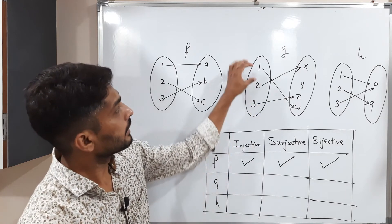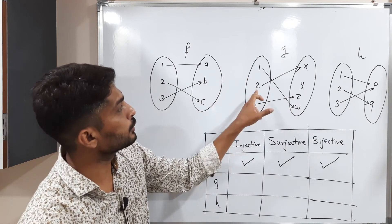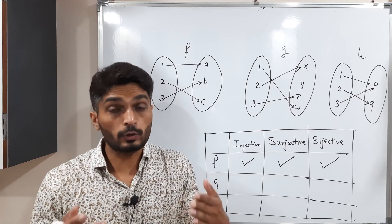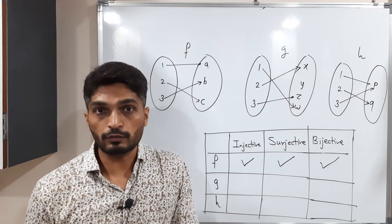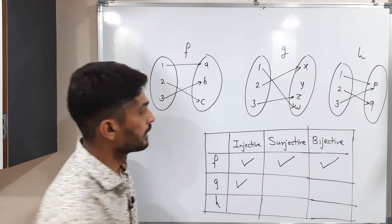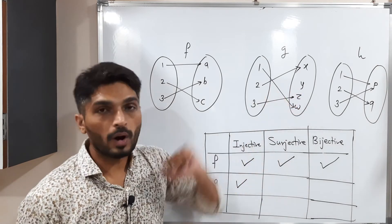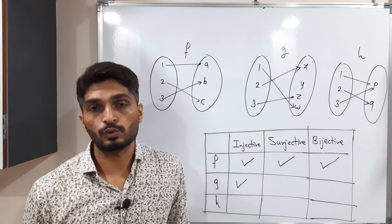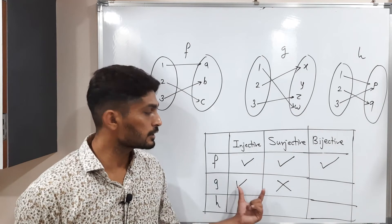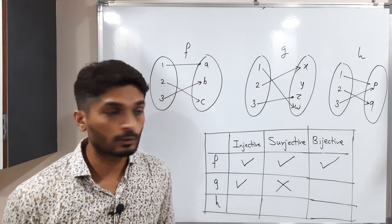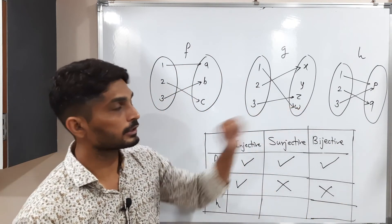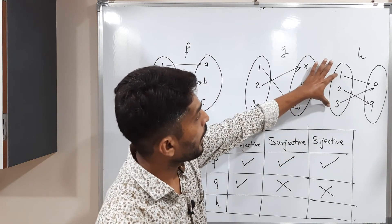In the second example, a maps to w, 2 maps to x, and 3 maps to z. No two arrows go to the same point, so the function is injective. However, element y has no pre-image, so it is not surjective. Since it is injective but not surjective, this function cannot be bijective.